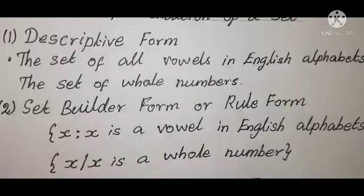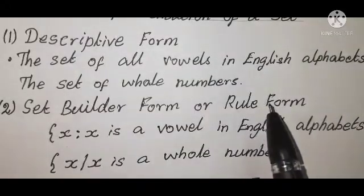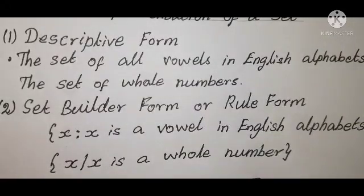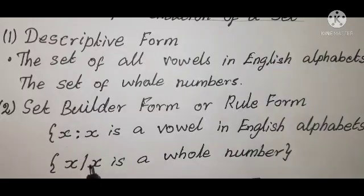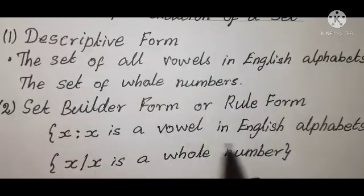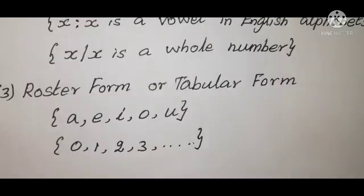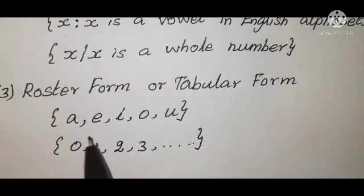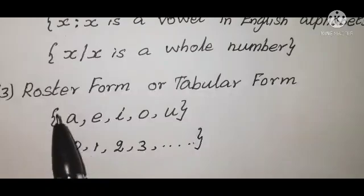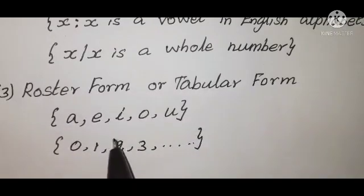Descriptive form: a set is described in words. Set builder form: all the elements are described by a rule. Roster form: a set is described by listing all the elements of a set.